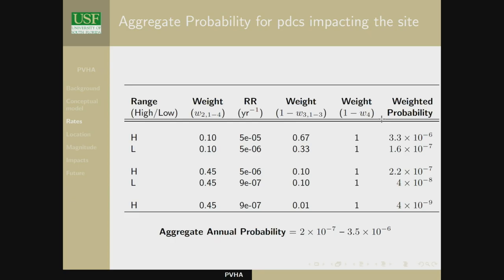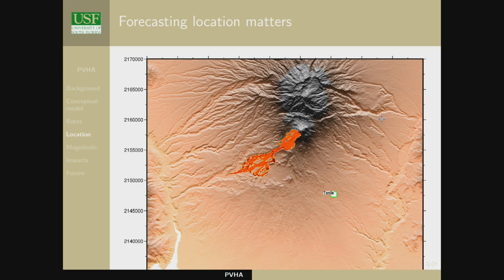That puts a lot of onus on figuring out from a magmatic system perspective whether our recurrence rate estimates are appropriate. There are huge social implications for this power plant — it's already built, already operating, and provides all the power for Armenia. So they said okay, they'll keep going.